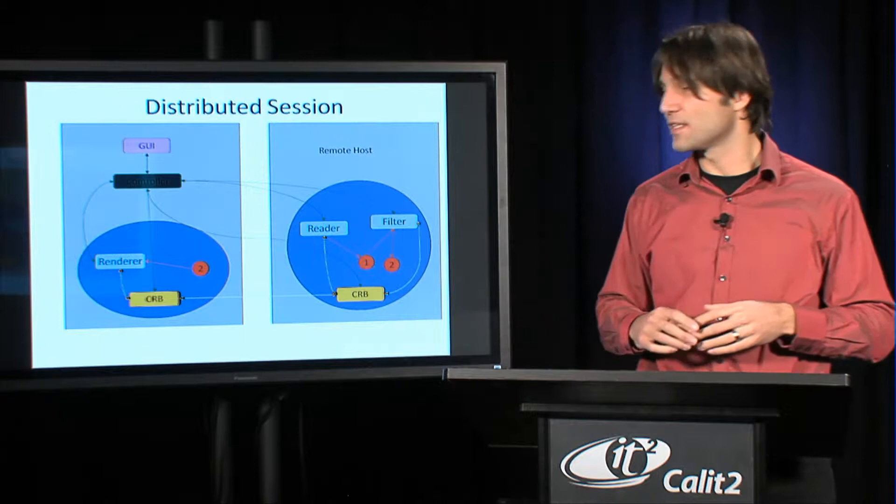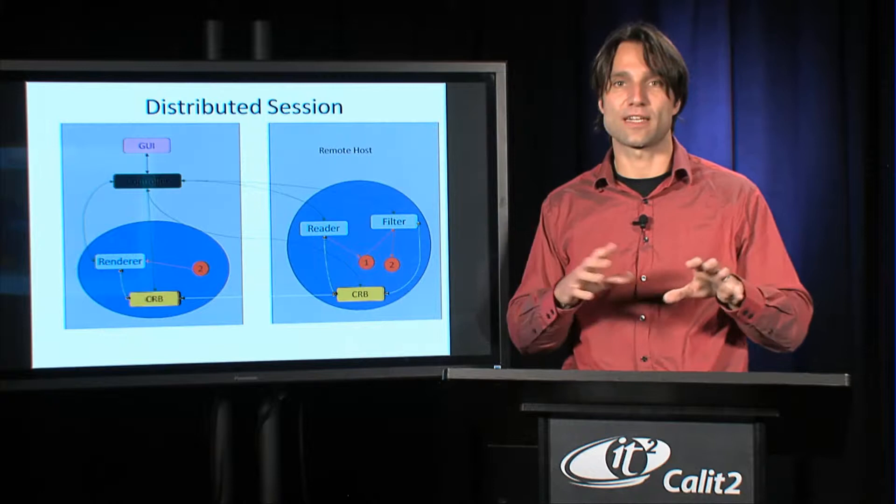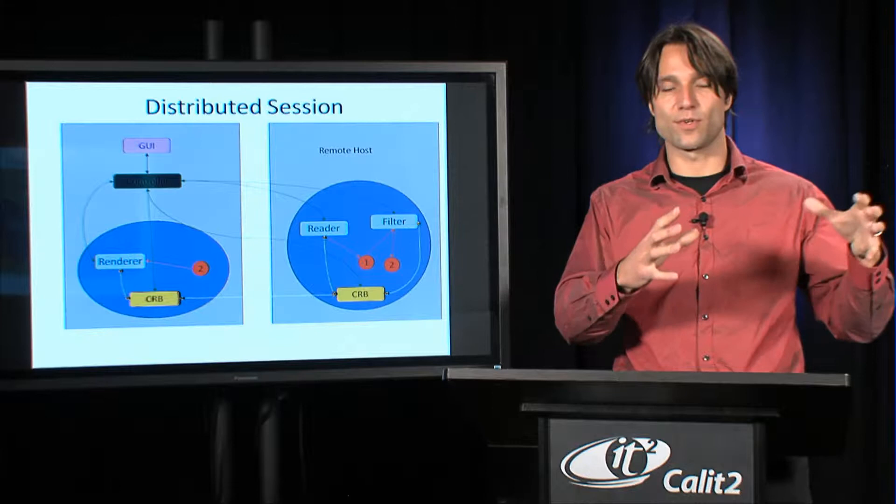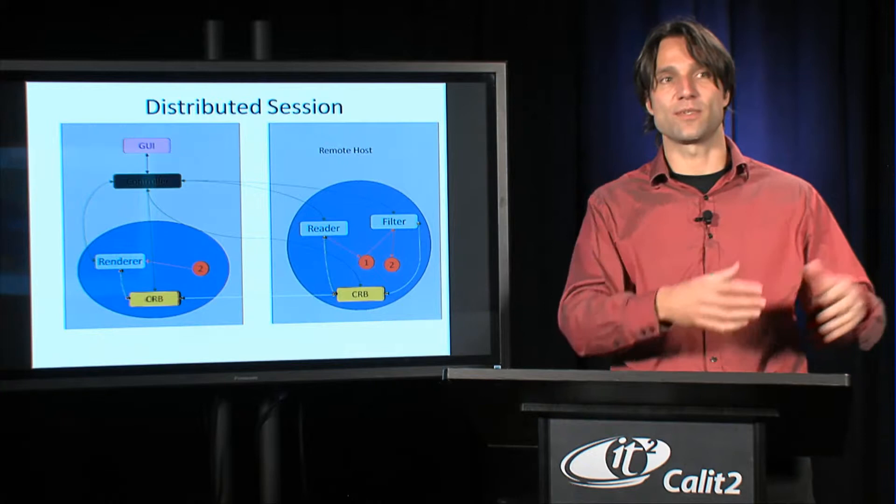Also the controller can talk to the modules from one system and the other system through the network. This can all happen through the network and can often happen between heterogeneous systems that run on different flavors of Linux, for instance. So you can integrate a computer that's not only more powerful but perhaps even if your system is a 32-bit system, that might be a 64-bit system and that might even work.